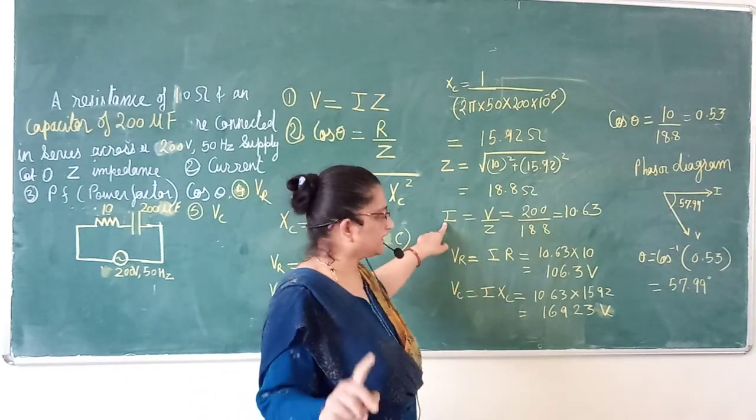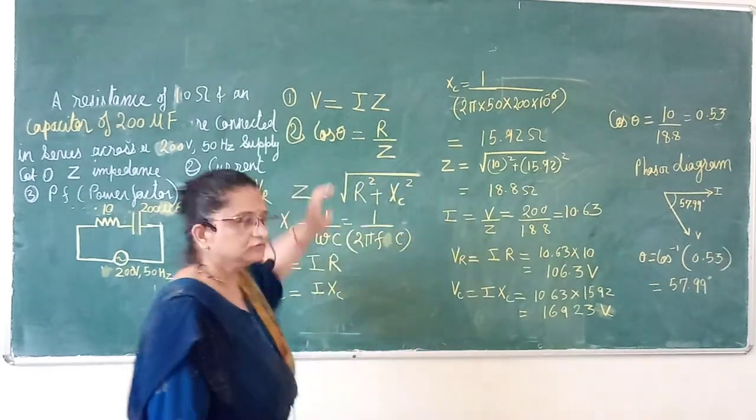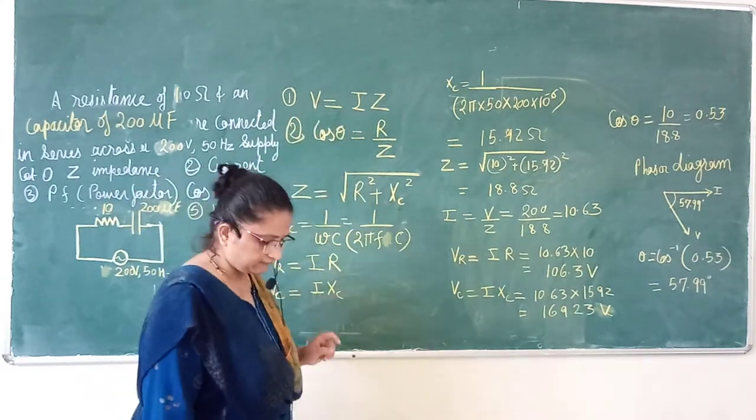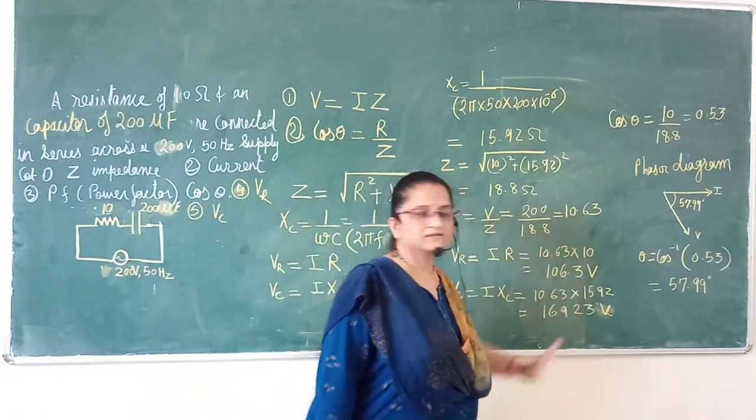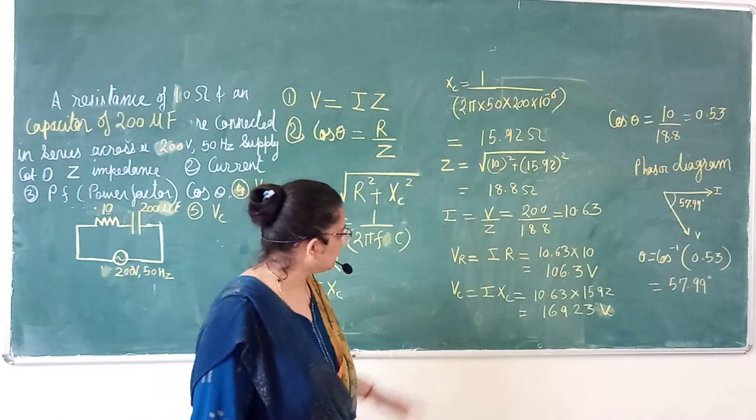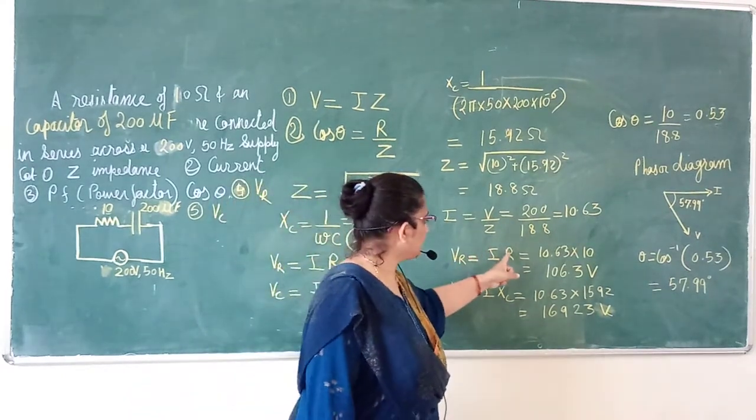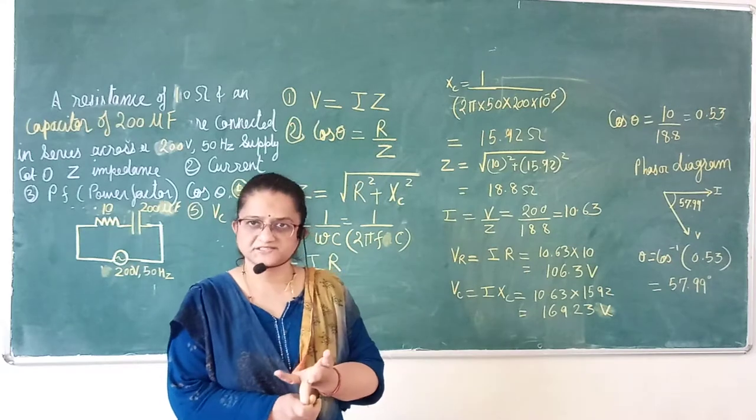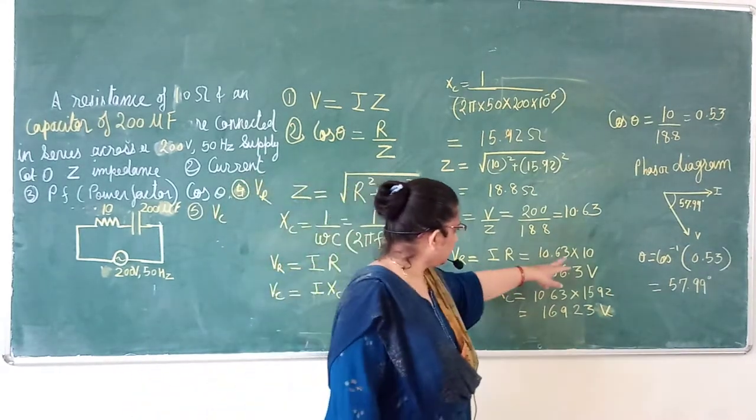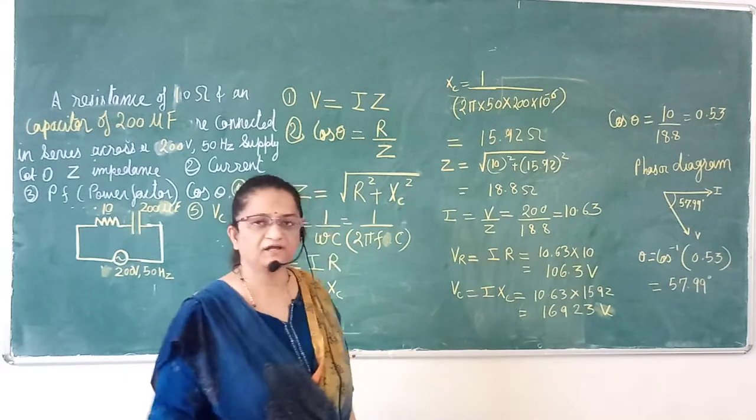Next find out current. Current is V upon Z. V is equal to I into Z, so it is V by Z. Value is 10.63. Next find out VR, voltage across resistor. Formula is I into R. Current and resistance, 10.63 into 10.